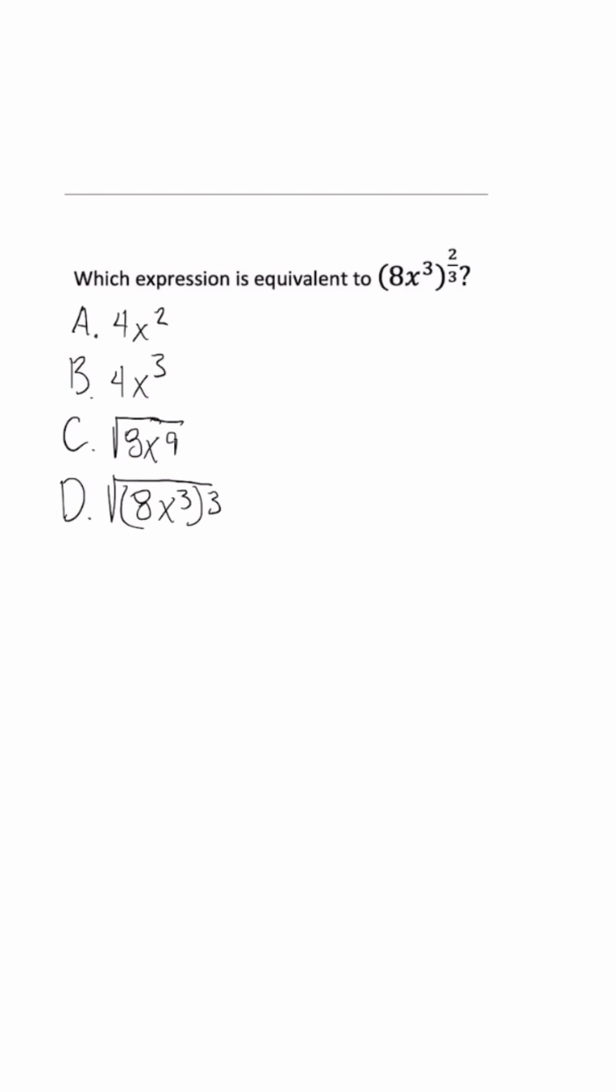So if we prioritize squaring this first, what we're saying is we have 64x to the sixth power, and what we want to do is take its cube root. So the cube root of 64 is just 4.